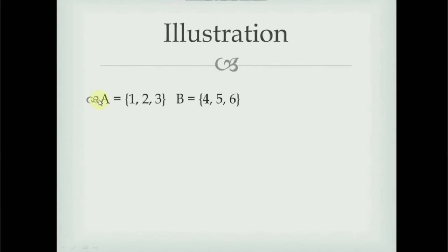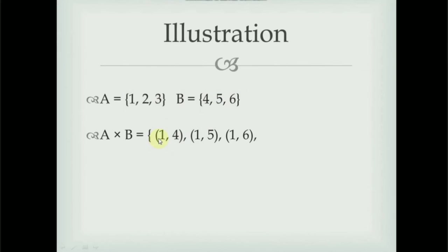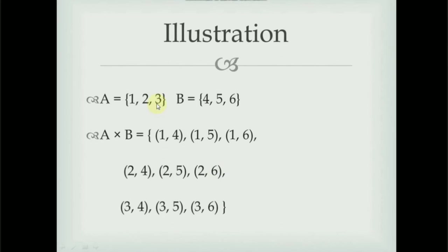Let us take an example: set A = {1, 2, 3} and set B = {4, 5, 6}. The Cartesian product A cross B is found by pairing each element of A with all elements of B. Taking 1: pairs (1,4), (1,5), (1,6). Taking 2: pairs (2,4), (2,5), (2,6). Taking 3: pairs (3,4), (3,5), (3,6). In total, we get nine elements in A cross B.